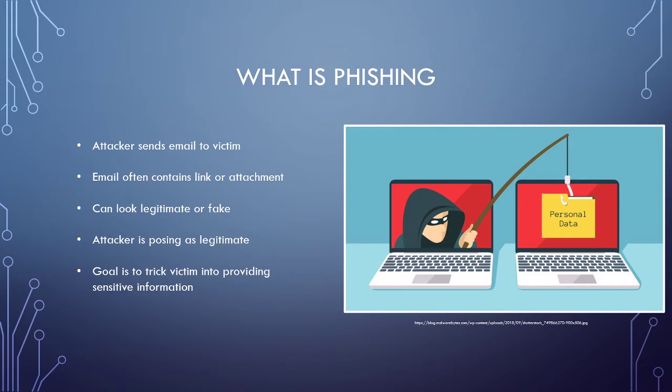So what is phishing? With phishing, an attacker will send an email to the victim. These emails can look extremely legitimate or fake depending on what the attacker is going for. Within the email there will often be either a malicious link or an attachment for the end user to click on. Typically the attacker can be posing as a legitimate person from a legitimate company depending on how real they want to get with the attack.